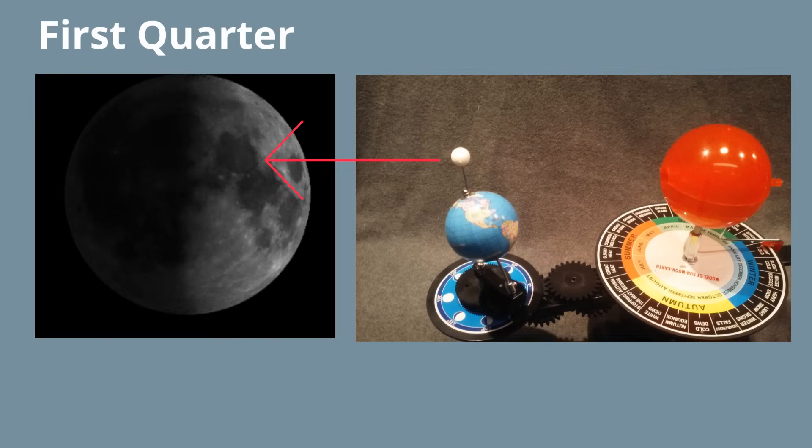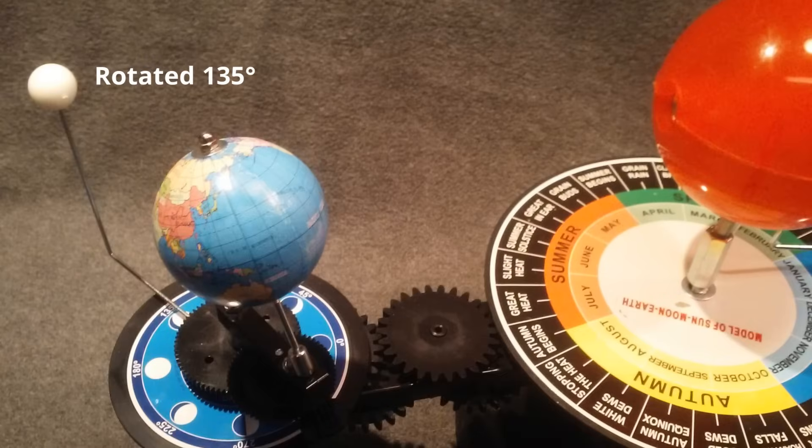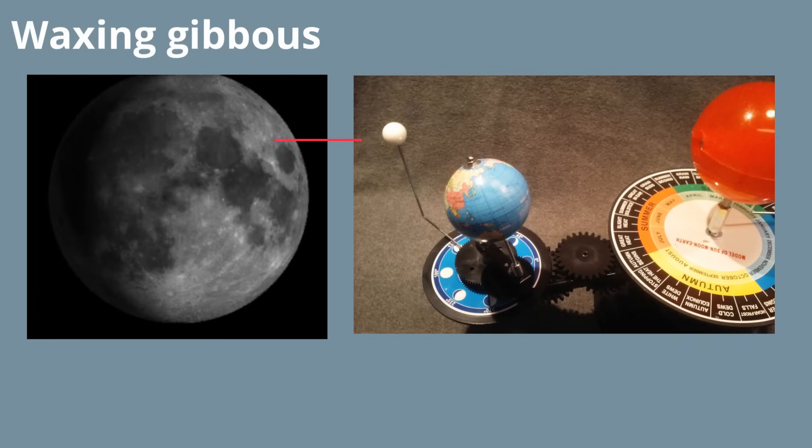In an additional 3.5 days, it has now traveled 135 degrees and is at waxing gibbous. Check out this alignment. Gibbous is the shape. And remember, waxing means that the light portion is growing.